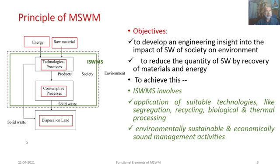The first element is waste generation, where waste is identified for its usefulness — this point needs control. The second is onsite handling, storage and processing at the point of generation, where there is a need to promote reuse, recovery and recycling. The third block is associated with the collection and hauling of the waste to the destination. There is a need to improve operation and maintenance as well as optimize the routing of the waste.